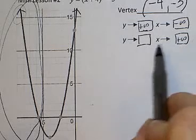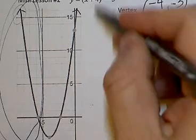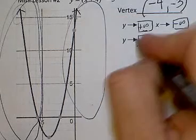And as I move to the right, what's happening? To the far right, the end behavior is also going up.